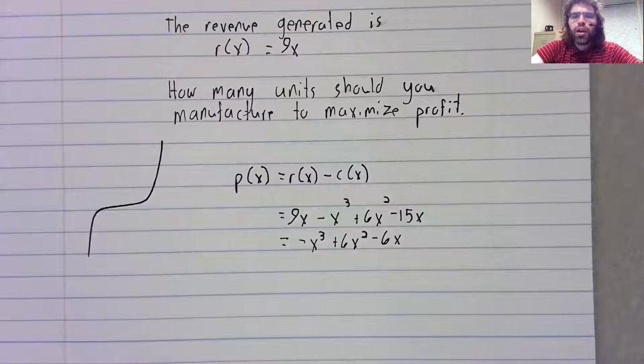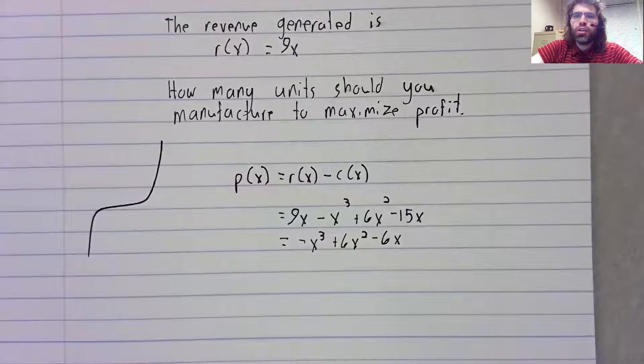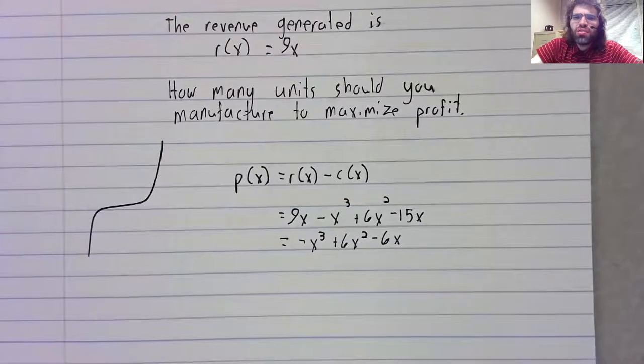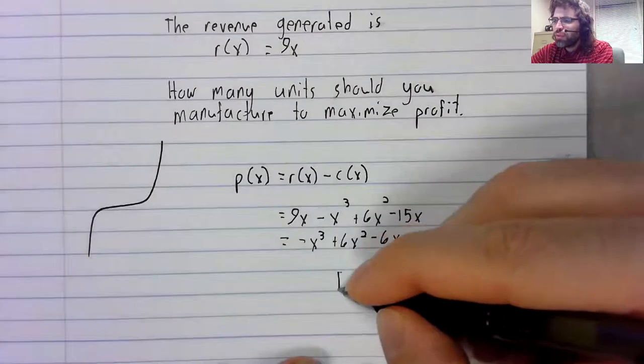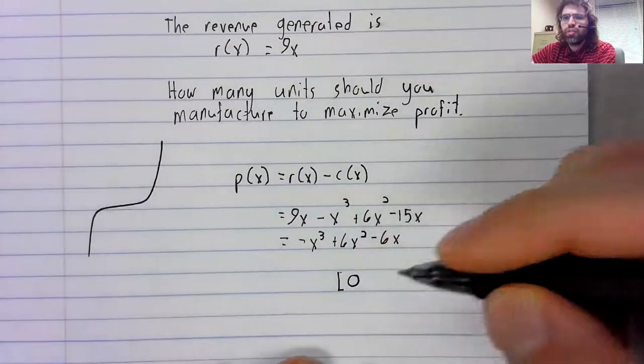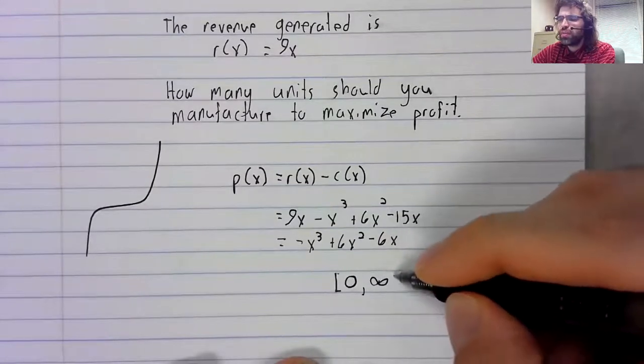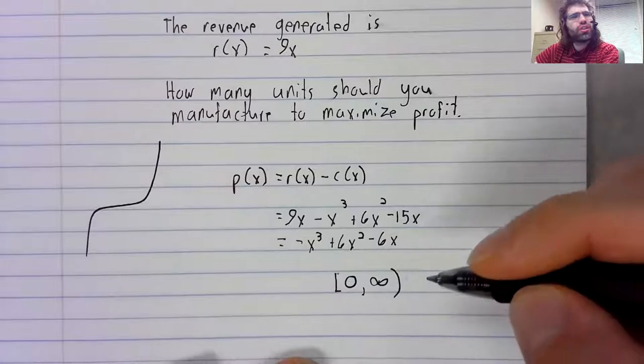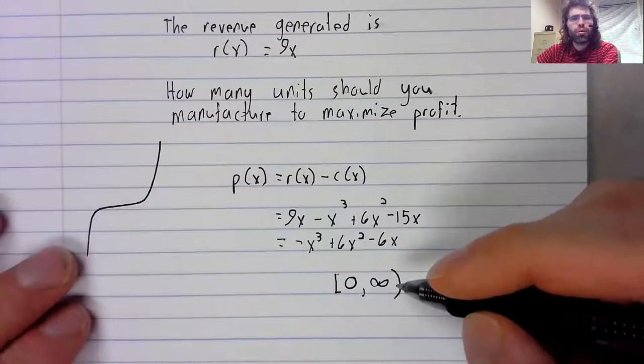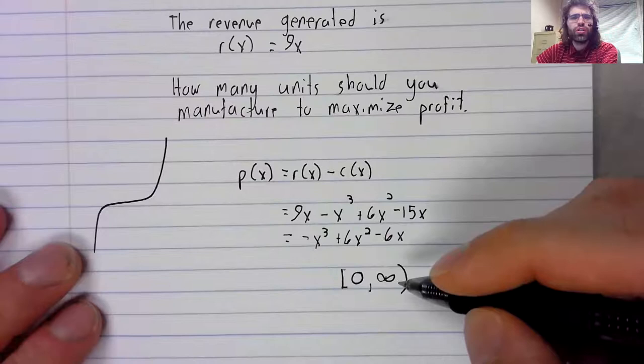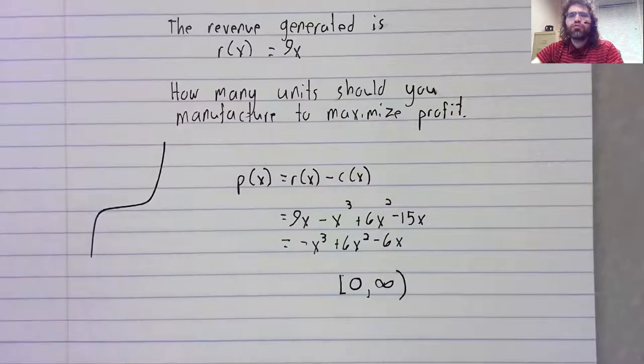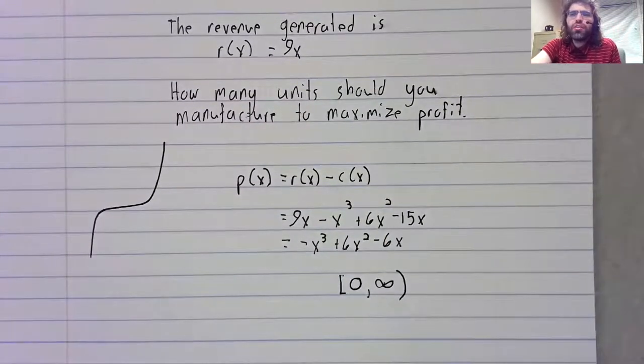On the other hand, our absolute extrema stuff was all done on closed intervals. And what's our closed interval here? We can't manufacture fewer than zero units. But it's not clear that there is really an upper bound.